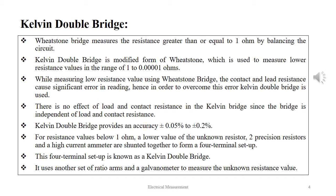For resistance values below 1 ohm, a low value of unknown resistance, two precision resistors, and a high current ammeter are shunted together to form a fourth terminal setup. This fourth terminal setup is known as the Kelvin double bridge. It uses another set of ratio arms and a galvanometer to measure the unknown resistance values.